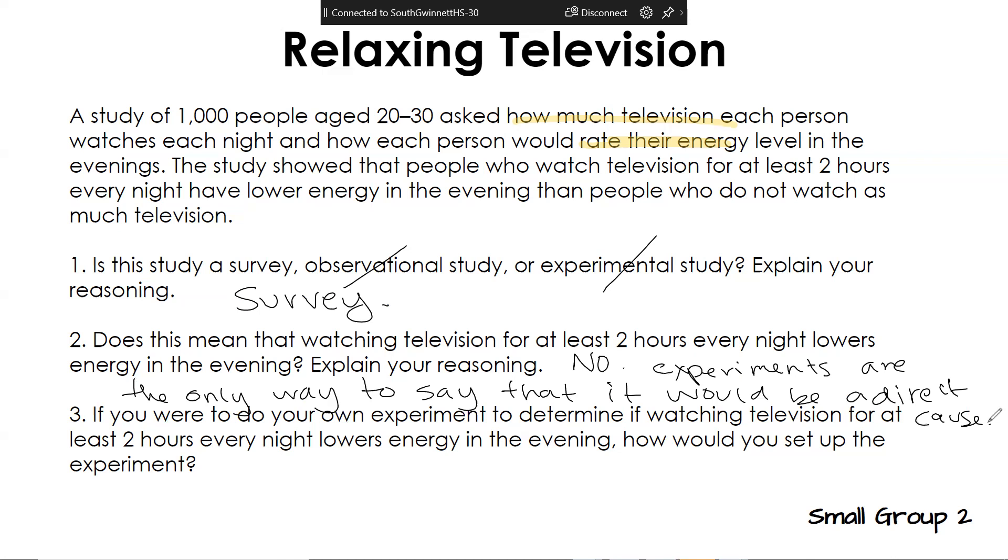So really quick, thinking about this. Experiments are cause and effect. If I do this, this will happen. Does that make sense? But since we're saying a survey, we're going to have a little bit of error because I could ask you, how do you feel after you've watched two hours of TV? And you'd be like, great. I could say the same thing and I would be like, I feel horrible because I just stared at television for two hours. So it just kind of varies. Now, if you were to do your own experiment, how would you set it up? Well, first you would have to have a population and you would randomly select people. That's going to be a keyword that you want to have. Then you would have a controlled group that did not watch television. And then you would have an experimental group that did watch television. And then you would compare their energy levels.